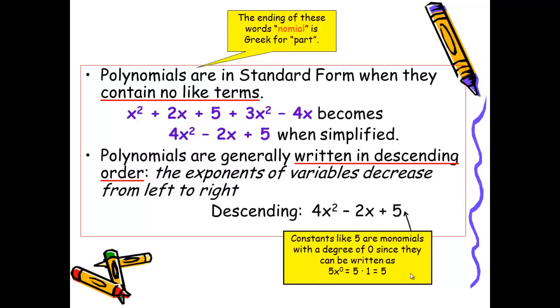We like to write polynomials in standard form. There are two criteria for a polynomial to be in standard form. First, it should contain no like terms. So if I start with an expression such as x² + 2x + 5 + 3x² - 4x, I would simplify by combining like terms. x² + 3x² yields 4x². 2x - 4x is -2x plus the constant 5.